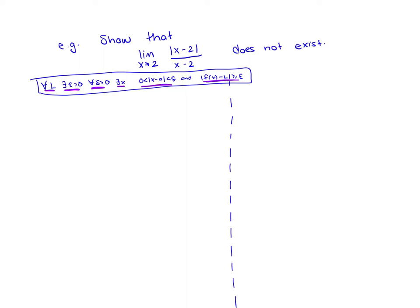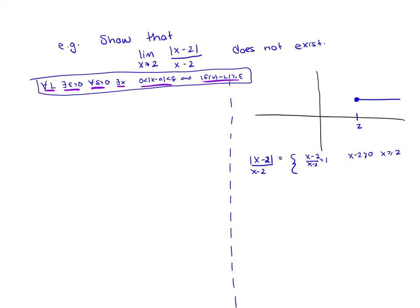Let's think about what this function looks like first to get a feel for what epsilon should be. The absolute value of x minus 2 equals x minus 2 when x minus 2 is positive, i.e., when x is greater than or equal to 2, so (x minus 2)/(x minus 2) equals 1 there. When x is less than 2, absolute value of x minus 2 is negative x minus 2, so dividing by x minus 2 gives negative 1. So this function is negative 1 before 2 and 1 after 2. We can see the limit doesn't exist, or recall from calculus that the limit can only exist if the left-hand limit equals the right-hand limit.